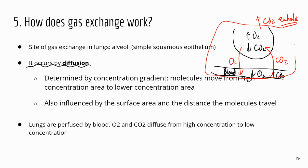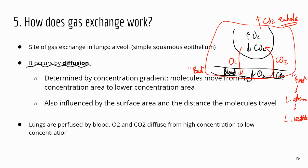After gas exchange at the lungs, the blood is changed from deoxygenated blood to oxygenated blood. The oxygenated blood goes back to the left atrium, then moves into the left ventricle, and starts the systemic circuit.